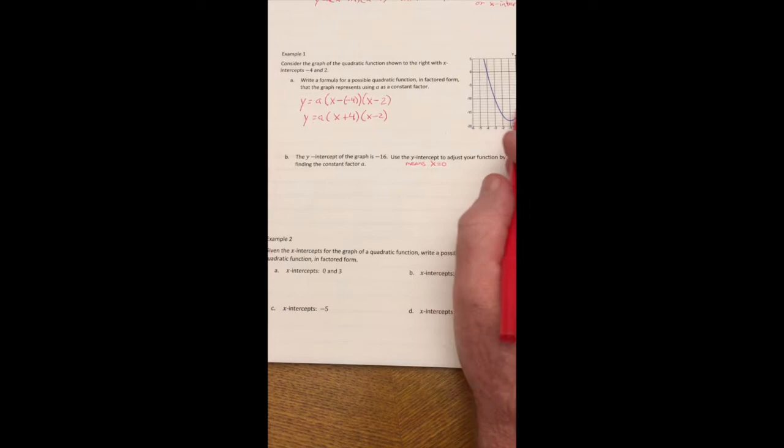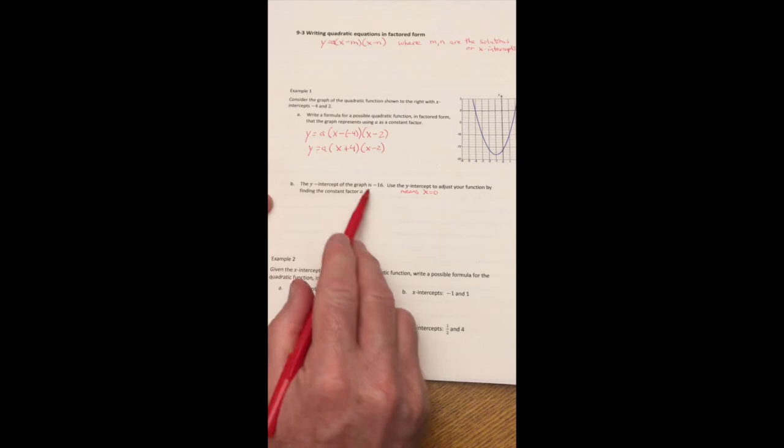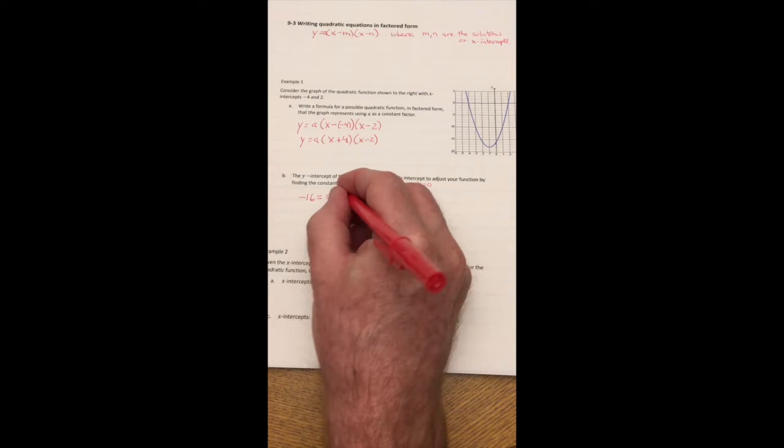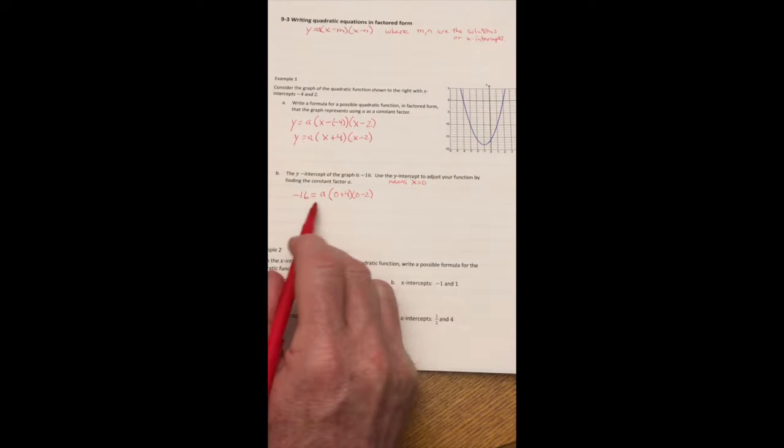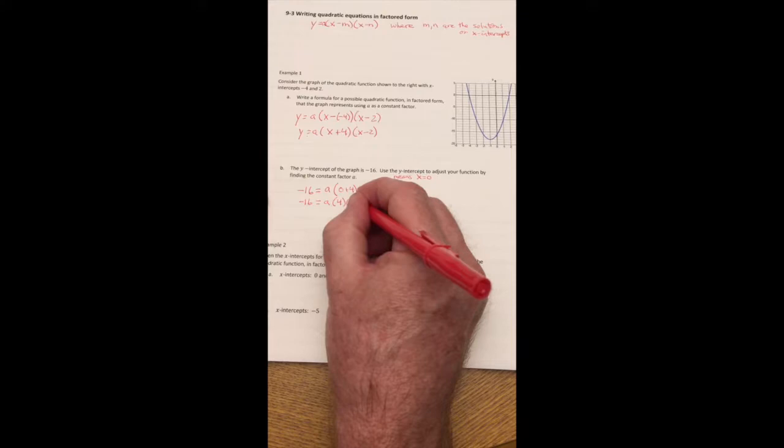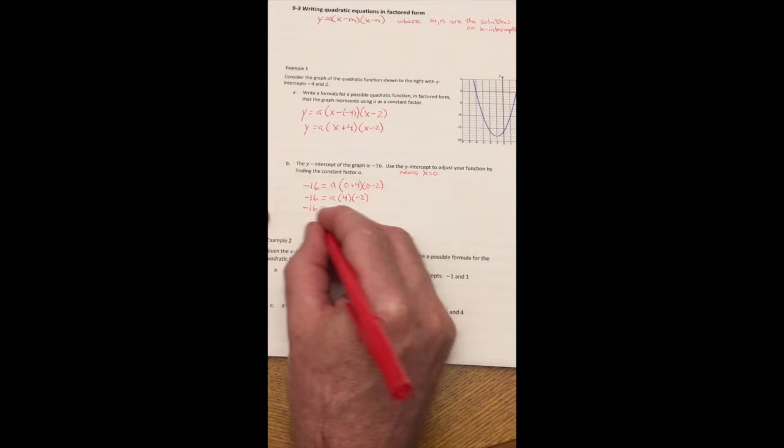So on the Y-line, where it intercepts there, the X value is always 0. So I can plug this value into my function and solve for A. The Y value is given as negative 16. The A value is what we're trying to solve for. We don't know that. The X value has to be 0. So I can put 0 plus 4 and 0 minus 2. And then this is fairly simple to solve if we do out the math. So we have minus 16. The 0 plus 4 obviously is 4. 0 minus 2 is negative 2. And if I multiply those, I get negative 16 equals negative 8A. And you can just divide by negative 8.